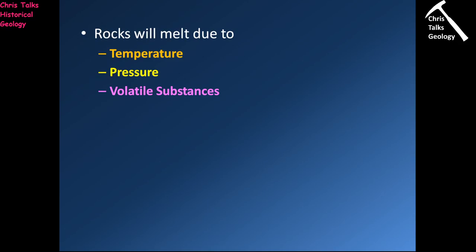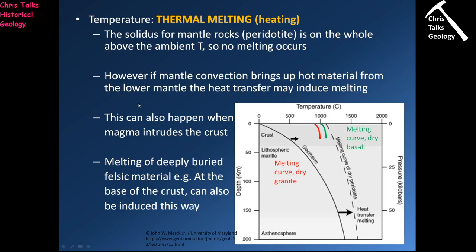How are we going to produce our magma? We can do it in one of three ways: through temperature, pressure, or volatiles. The first method is quite simple — increase the temperature.